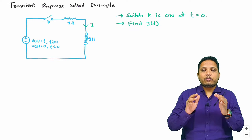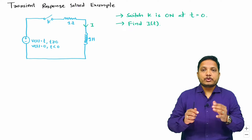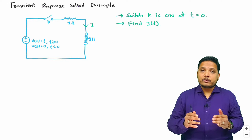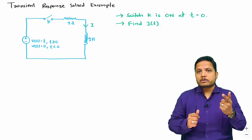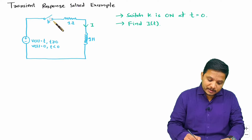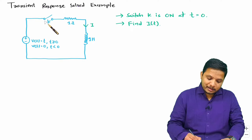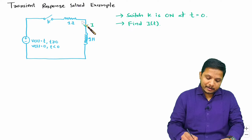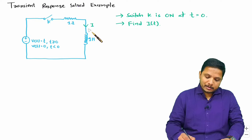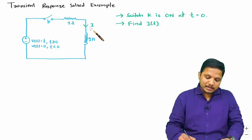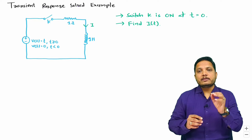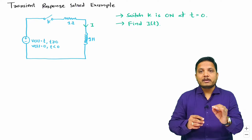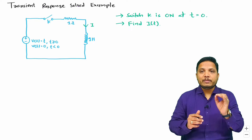Whenever you have a question based on transient response, you should understand it with respect to the time frame — you should bisect it with respect to time. Before t equals 0, switch was off, and if this switch is off then this loop is getting open circuited, so you don't have current passing through this loop. So i will be 0 if the switch is off.